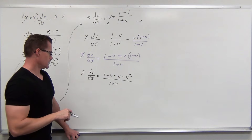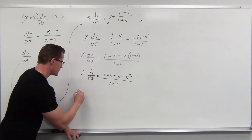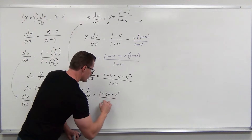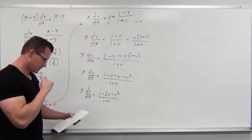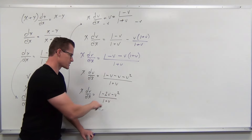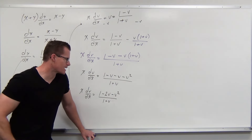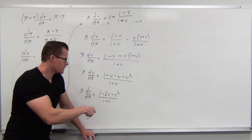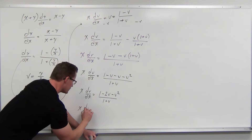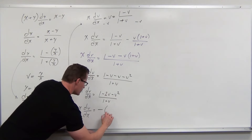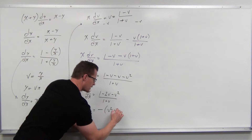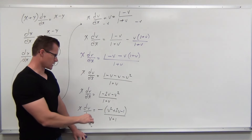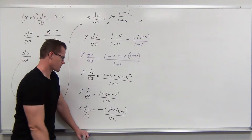Simplifying, we have x(dv/dx) equals (1 minus 2v minus v²) over (1 plus v). I don't like the way this looks — it's nicer to have the first term positive. So let's factor out the negative: we get negative(v² plus 2v minus 1) over (1 plus v). Now it looks better as a separable equation because we have the v's in one fraction and x on the other side.